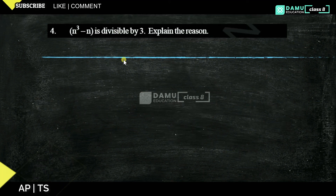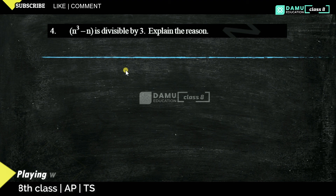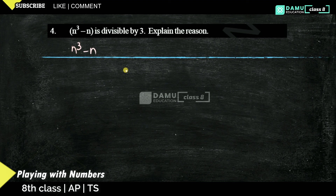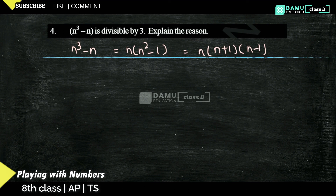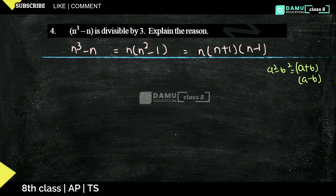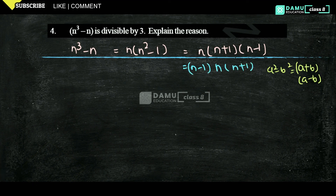In this module we are going to discuss: n cubed minus n is divisible by 3 — explain the reason. So, n cubed minus n can be written as n into (n squared minus 1), which equals n into (n plus 1) into (n minus 1), using the formula a squared minus b squared equals (a plus b)(a minus b). So it is the product of three consecutive numbers: (n minus 1), n, and (n plus 1).